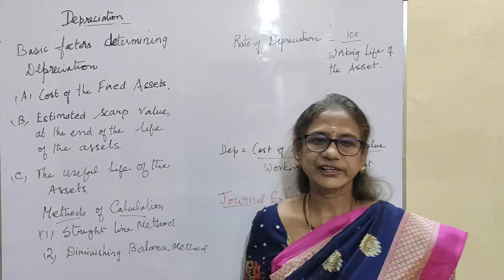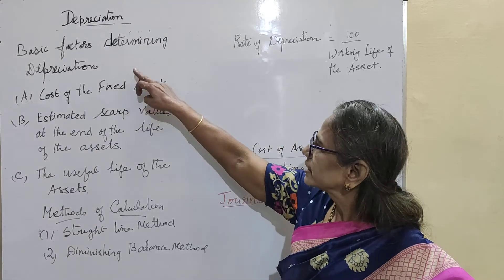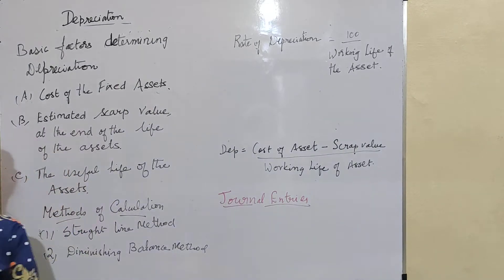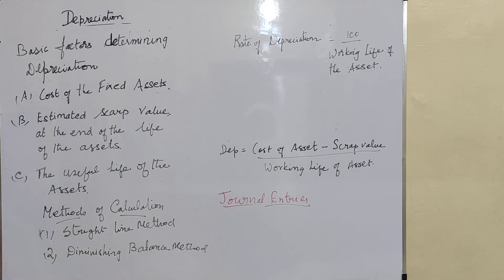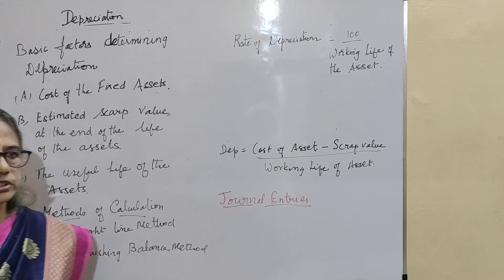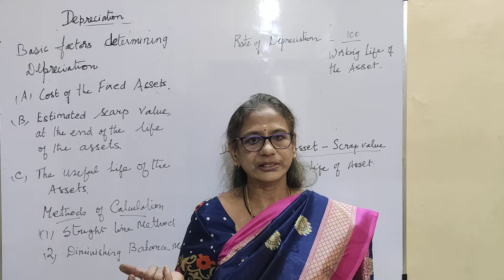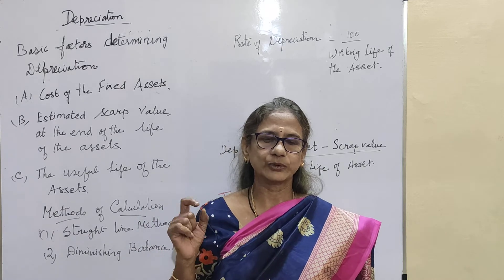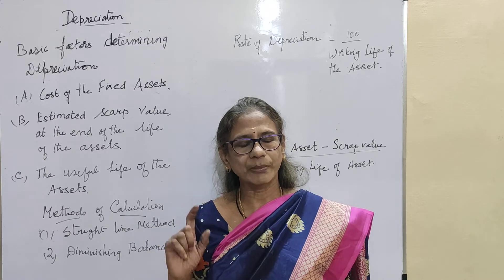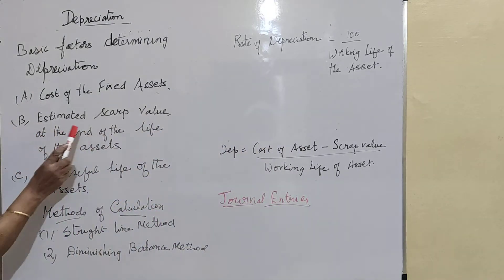Let us see the basic factors determining depreciation. First is the original cost of the fixed asset. Then the estimated scrap value at the end of the life of the asset, which should be subtracted from the original cost. For example, if the original cost is 150,000 and the scrap value at the end of the lifetime is 25,000, then 150,000 minus 25,000 will be taken for the calculation.